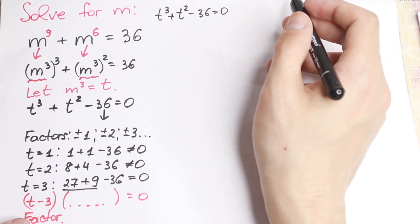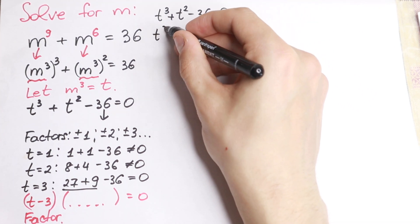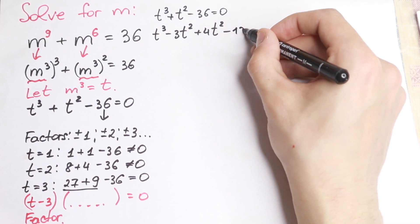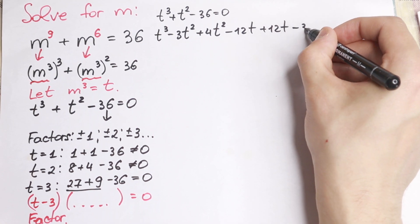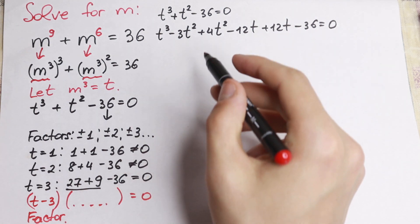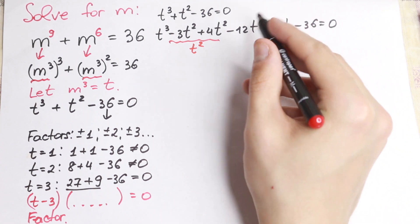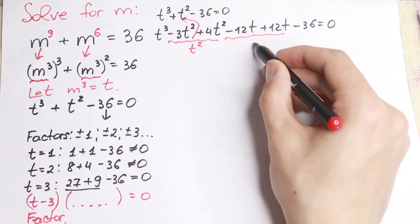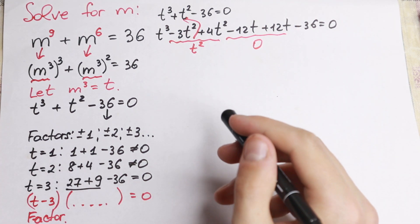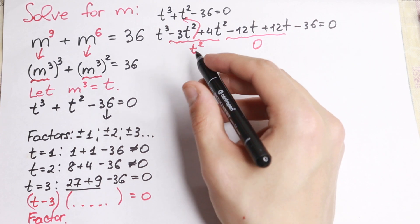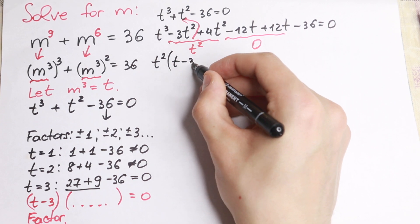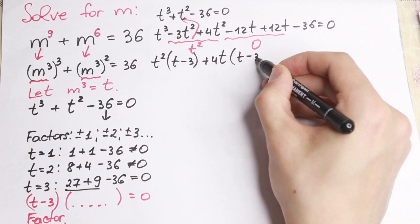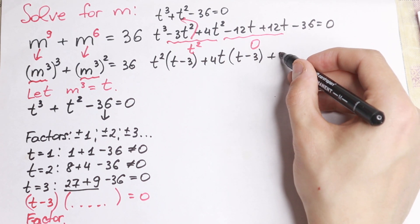We need to factor out t minus 3 from here, but we have t cubed. So I write this as t cubed minus 3t squared plus 4t squared, and minus 12t plus 12t minus 36 equal to 0. Why do I write this? Because right here minus 3t squared plus 4t squared equals t squared — so nothing changed, this is the same expression. Now we can factor out t minus 3. Look: t cubed minus 3t squared, factor out t squared gives t minus 3. Factor out plus 4t gives t minus 3. And factor out 12 from the last two elements gives t minus 3.